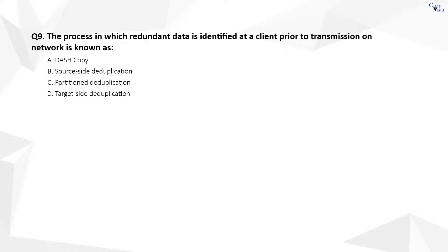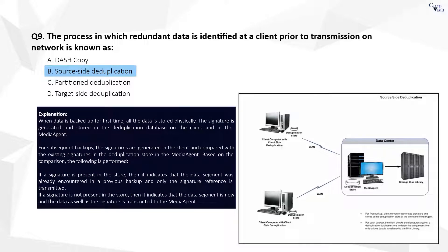Question 9. The correct answer is B. Deduplication on the source side identifies and eliminates redundant data from the client. This reduces the data transfer rate over the network from the client to the media agent.